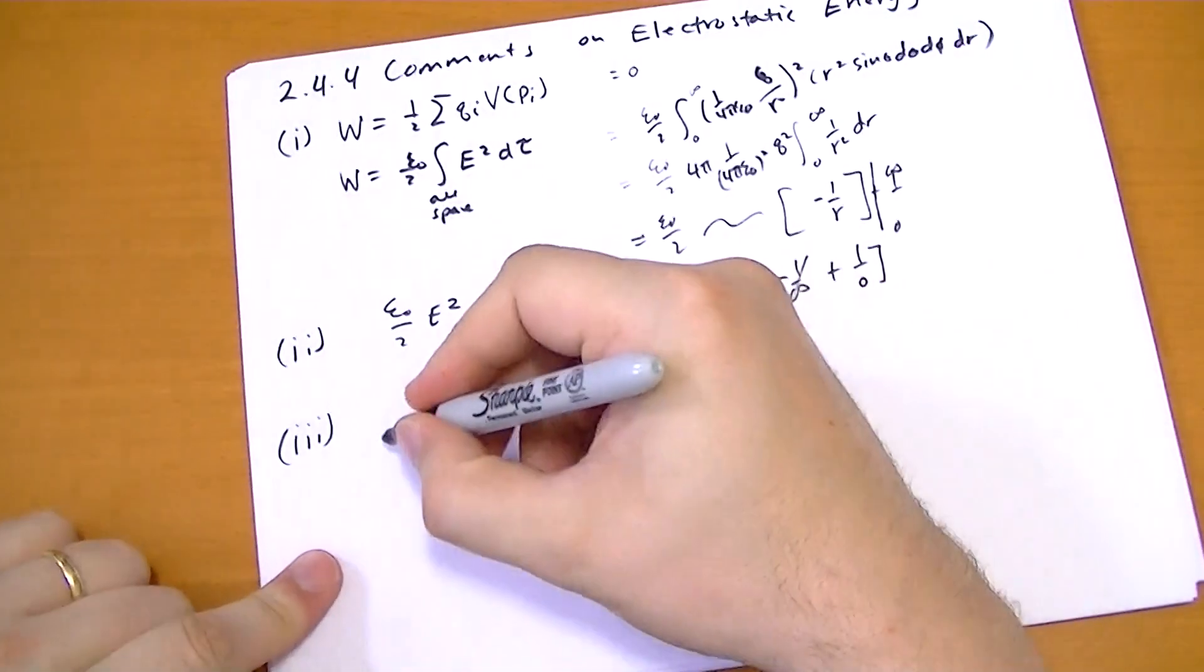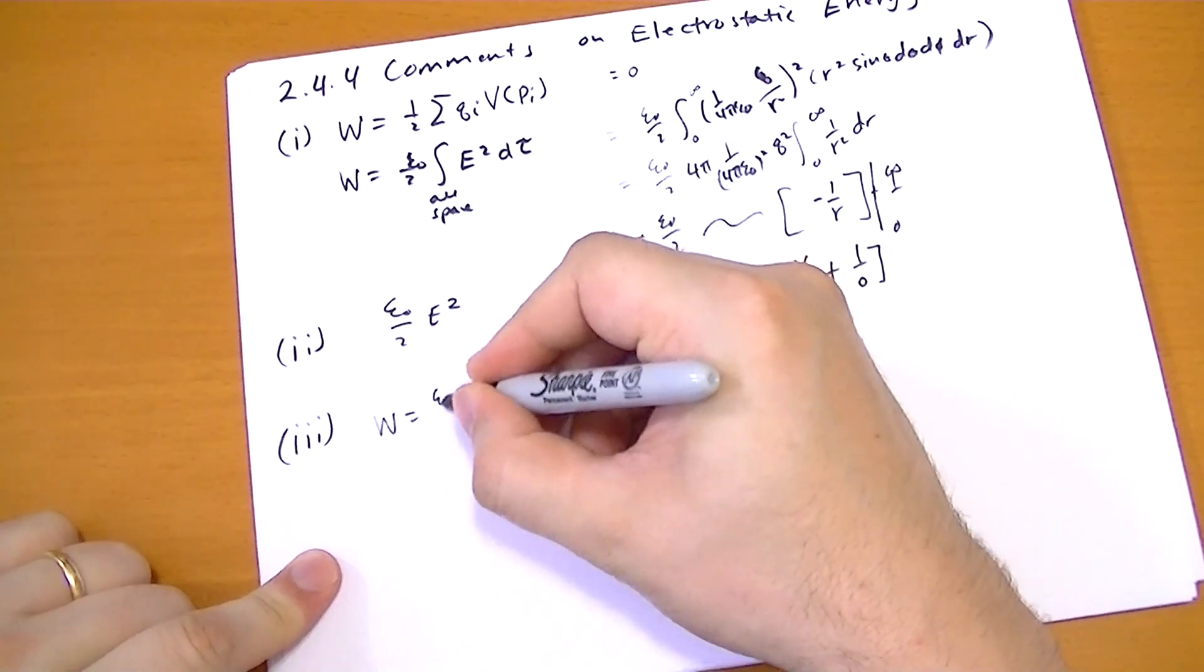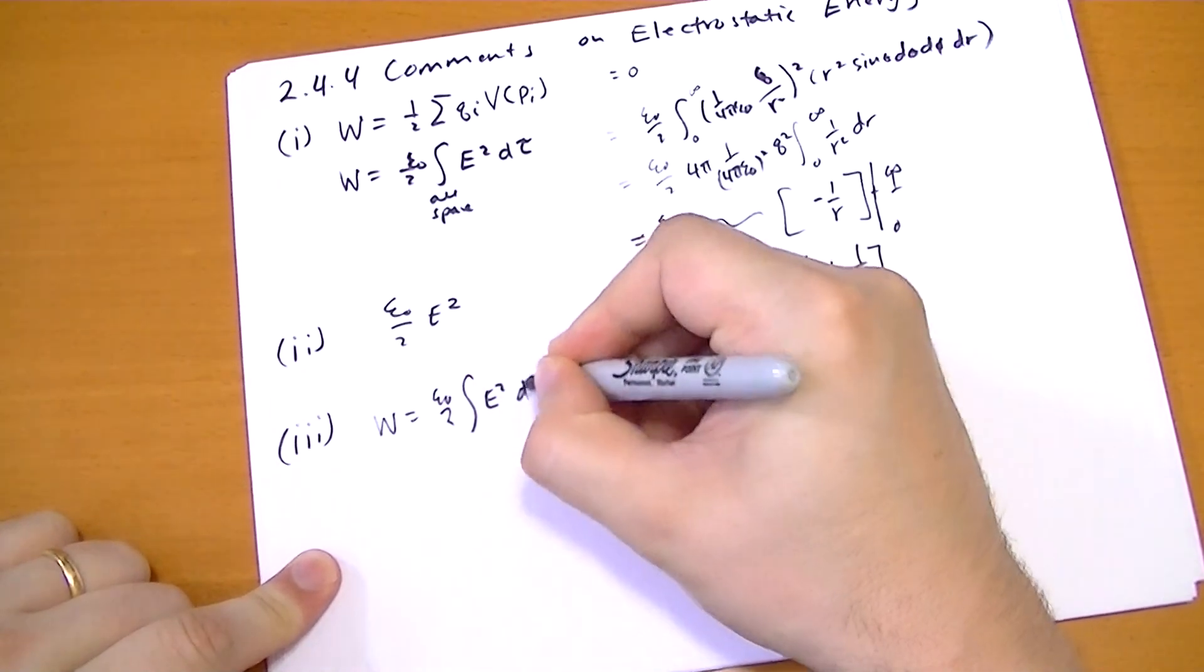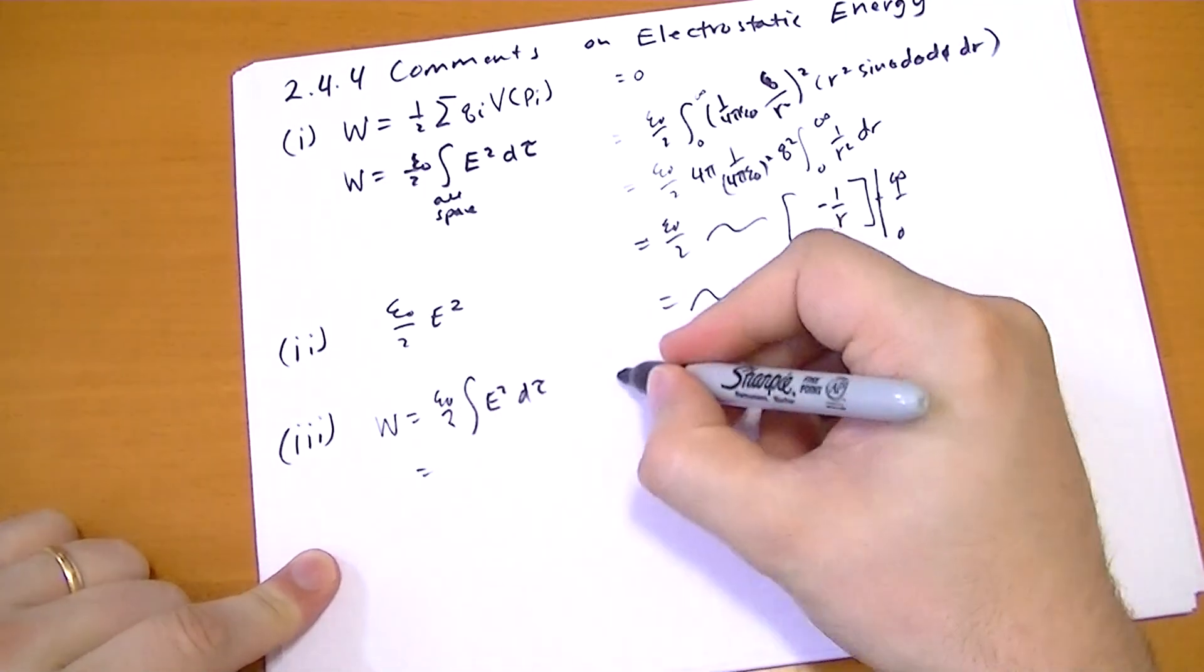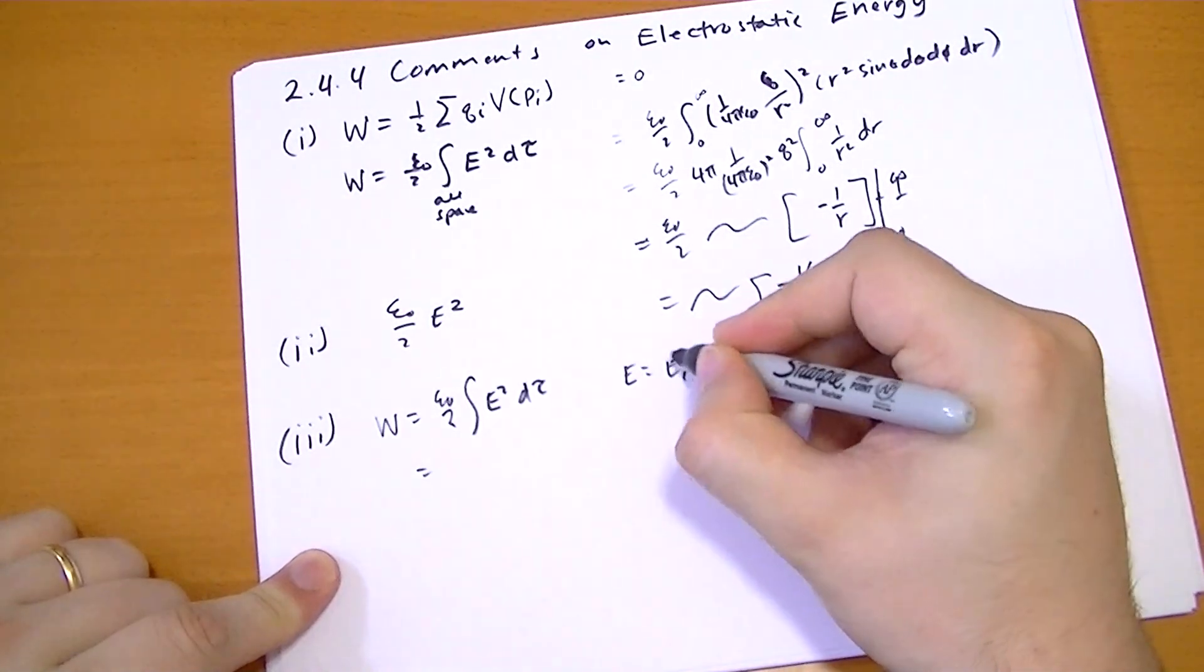So the work, the energy is equal to epsilon not over 2 of the electric field squared d tau over all space. Let's say, you know, electric fields is actually equal to two fields put together.